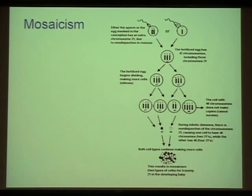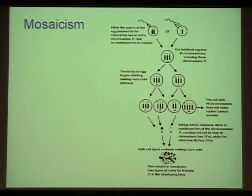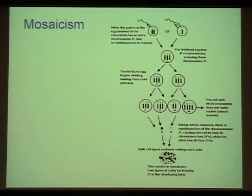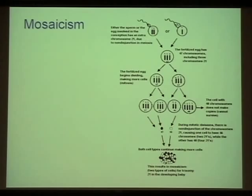To some extent that's true, but I don't dwell on it with families because I've seen children with mosaicism who are similarly affected as children with full trisomy 21. Sometimes it's hard for families when we tell them their child doesn't have mosaicism — they get disappointed thinking the child won't do as well. It's really not a big determinant of how well the kids do.